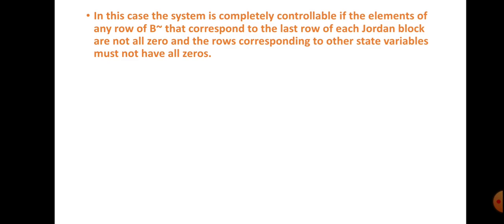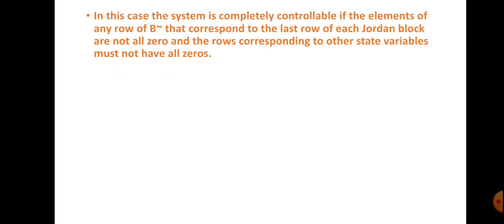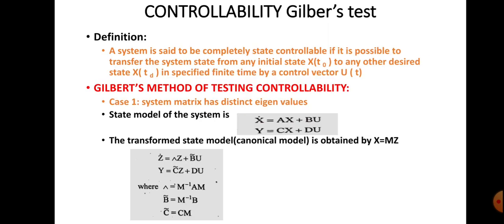In the repeated eigenvalue case, the system is said to be completely controllable if the elements of any row of B̂ that correspond to the last row of each Jordan block are not all zero, and the rows corresponding to other state variables must also not have all zeros. So we analyze the B̂ matrix based on the Jordan block structure to predict controllability. This concludes Gilbert's method of testing controllability.